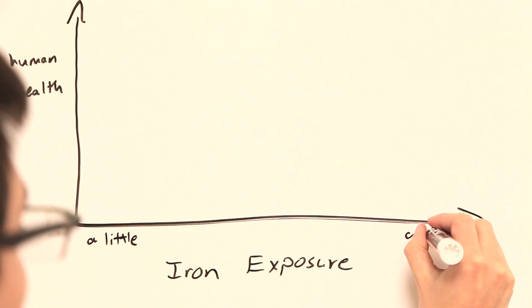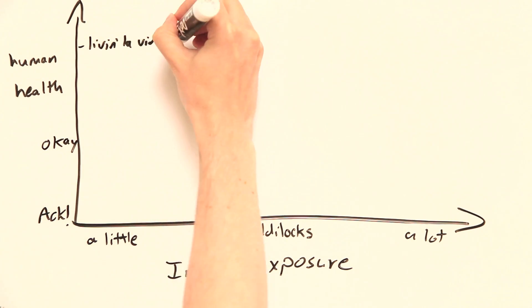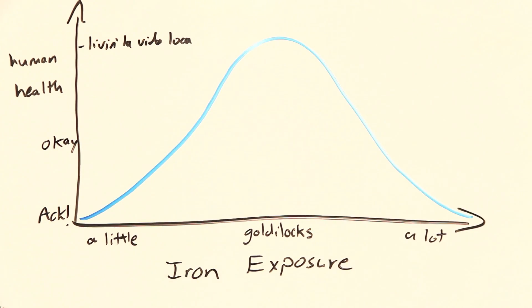Toxicologists tend to look at maximum values, how much of something a person can be exposed to without suffering a negative consequence, while nutritionists tend to look at minimum values, how much of something does a person need to be exposed to to avoid suffering a negative effect. It's two sides of the same coin.